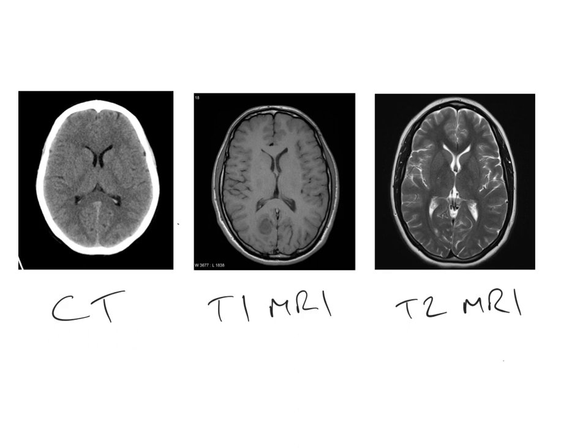Let's look at the CT scan on the left hand side first. In comparison with the MRI scans, CT scans are relatively low resolution, so we really don't get a huge amount of anatomical detail when looking at the deep structures of the brain or even the details of the gyri and sulci of the cerebral cortex. However, what CT is very good at is showing us bony anatomy — we can see the bone of the skull is very well demonstrated, which is why CT is a good modality for looking for skull fractures.